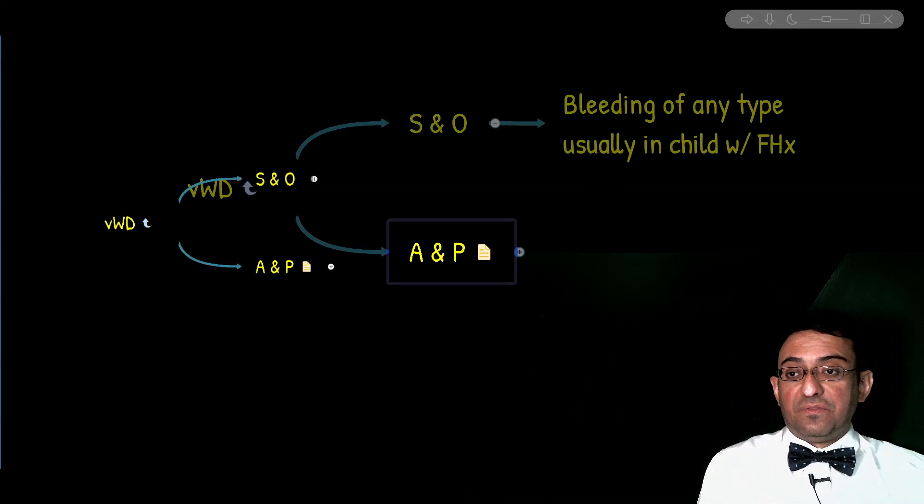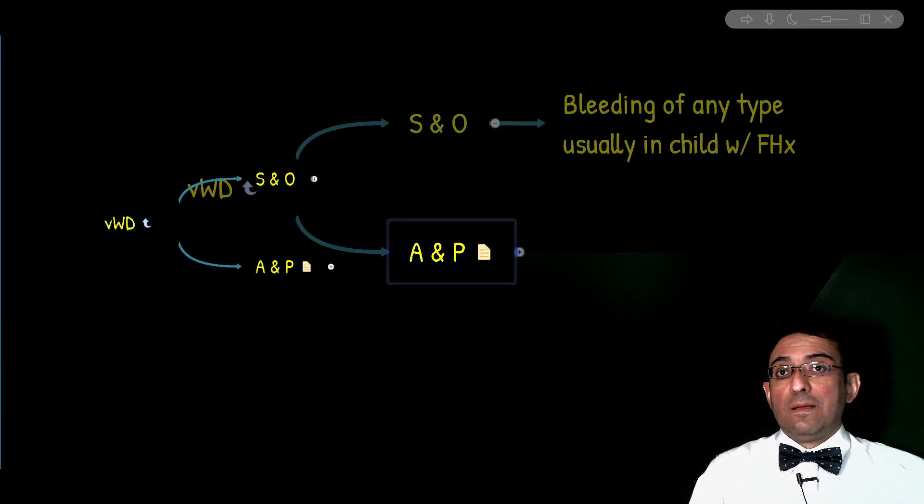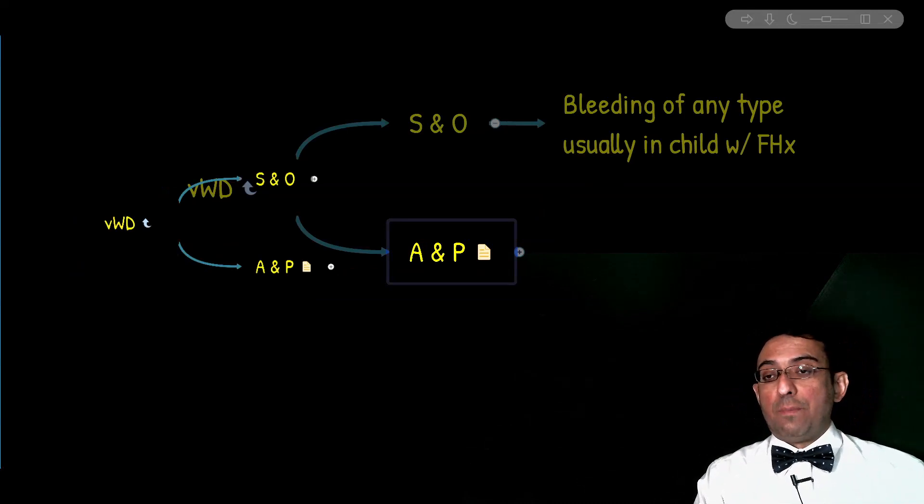For the von Willebrand function assessment, we use Ristocetin cofactor assay that evaluates the ability of von Willebrand factors in patients' plasma to aggregate platelets. For quantitative measurement, we use von Willebrand factor antigen level. You remember, type I and III are quantitative defects. The type III is complete absence and is autosomal recessive, while type II is qualitative dysfunction.